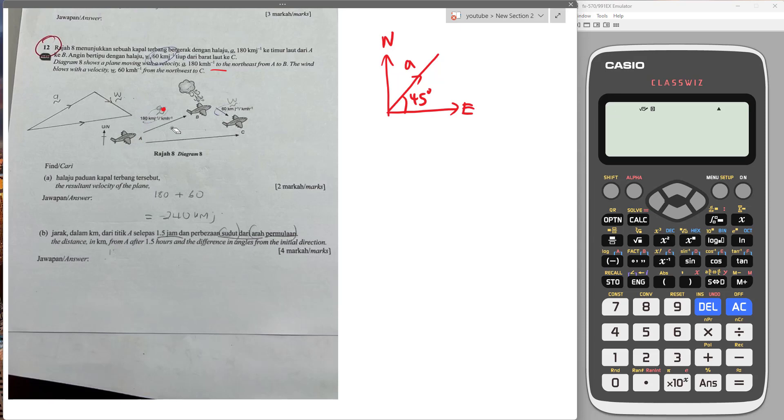And then the wind blows with velocity W, 60 kilometers per hour from the northwest. So if this is north and we have west here, then from the northwest it's going this direction. Here is also 45 degrees because it's northwest. This is 60, so W will be 60 and A will be 180.